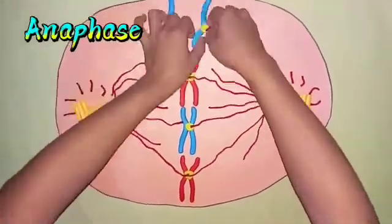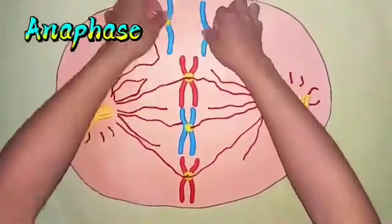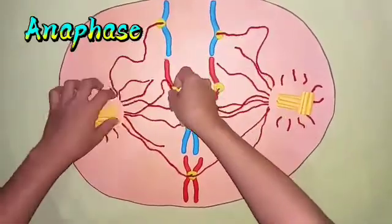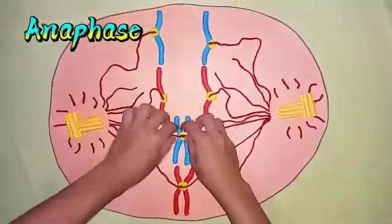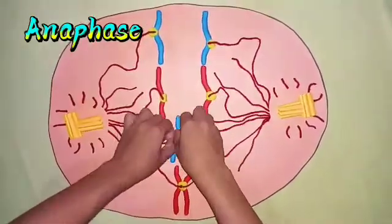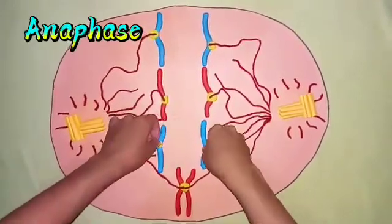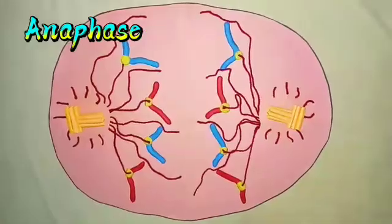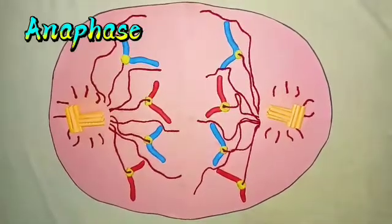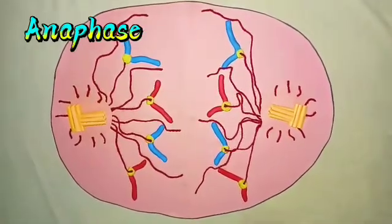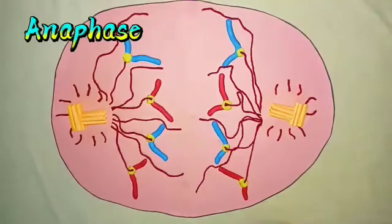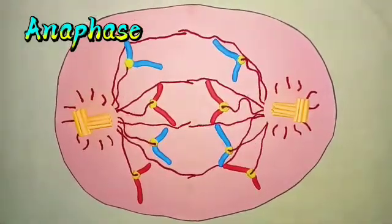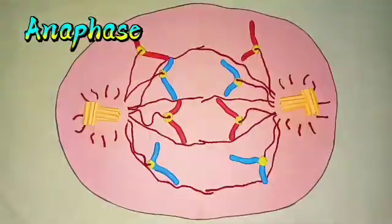In anaphase, enzymes break down the proteins in the centromeres, allowing the two chromatids to separate. Once the chromatids separate, they are considered to be individual chromosomes. The paired chromosomes separate at the kinetochores and move to opposite sides of the cell. Motion results from the combination of kinetochore movement along the spindle microtubules and through the physical interaction of polar microtubules.